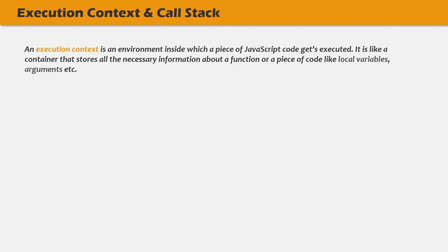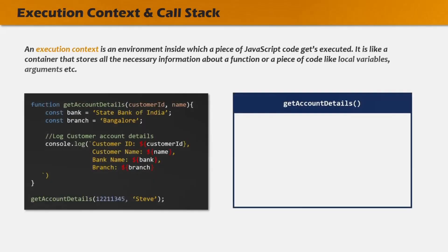Let's understand what an execution context is with a simple example. We have a function called getAccountDetails. This function takes two parameters, customer ID and name. Inside this function, we are also creating two constants, bank and branch, and then we are logging the details like customer ID, name, bank, and branch. So for this function, customer ID, name, bank, and branch are the parameters and variables which this function is creating.